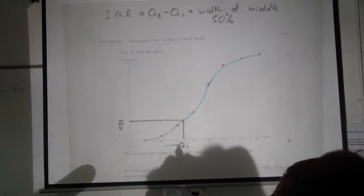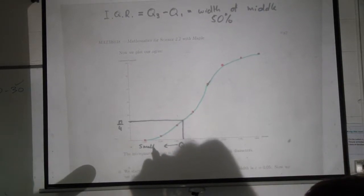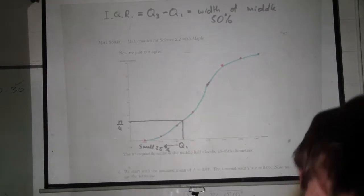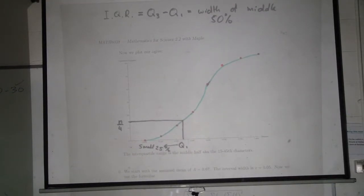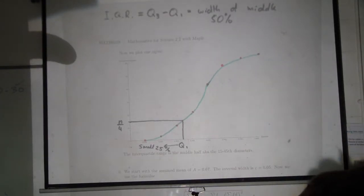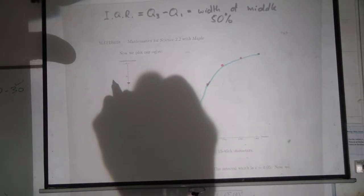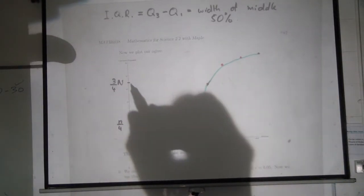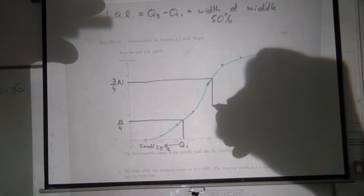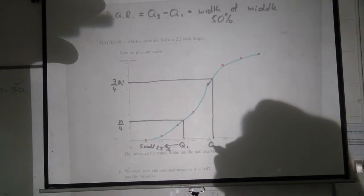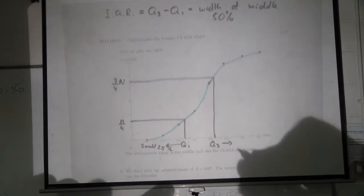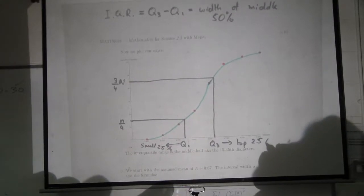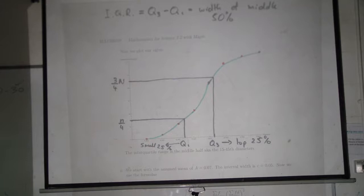Similarly, you can do things like the small 10% or the top 10%. Now the Q3, you go up to n times 3 quarters, which should be 45, go across, go down. This is what's called Q3, and here you have the top 25%. Your interquartile range is the difference between them.